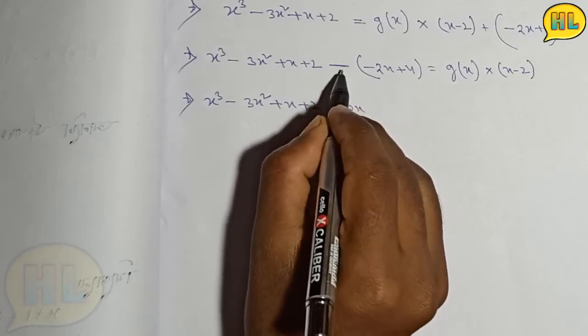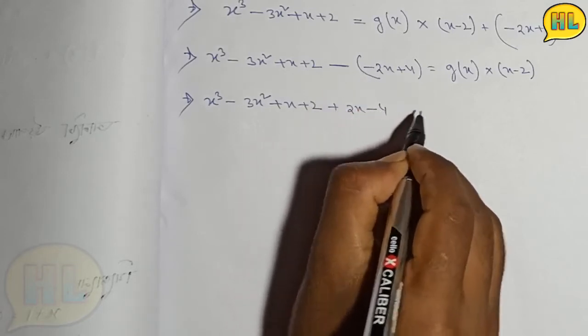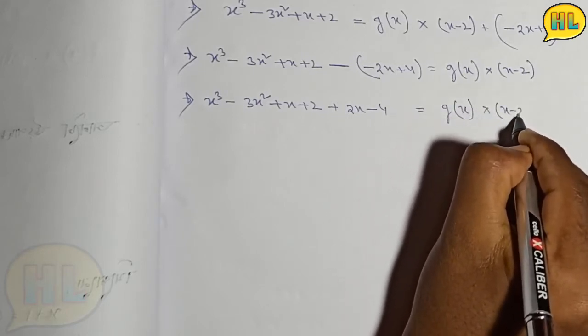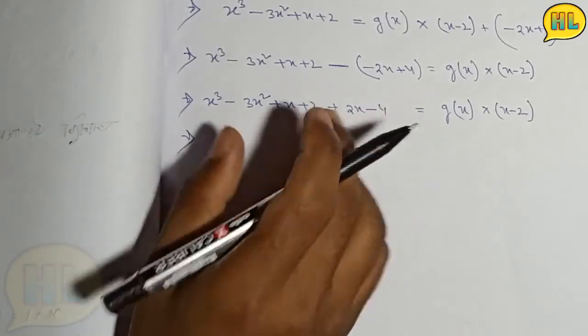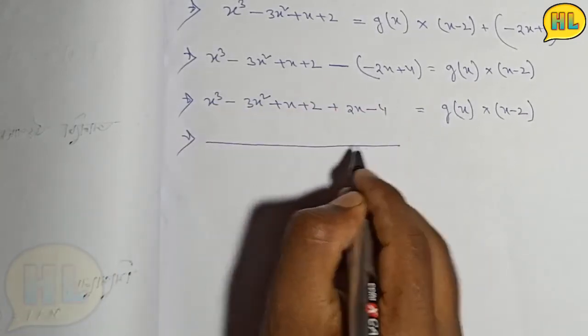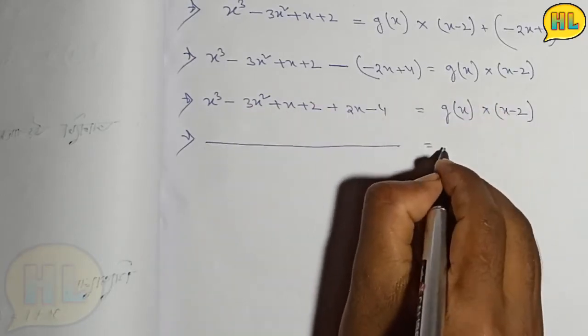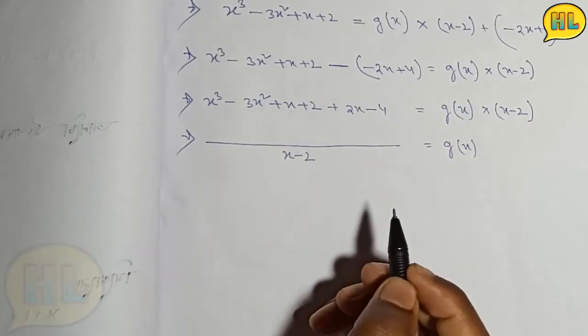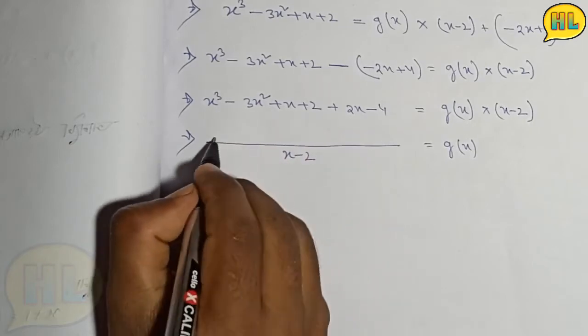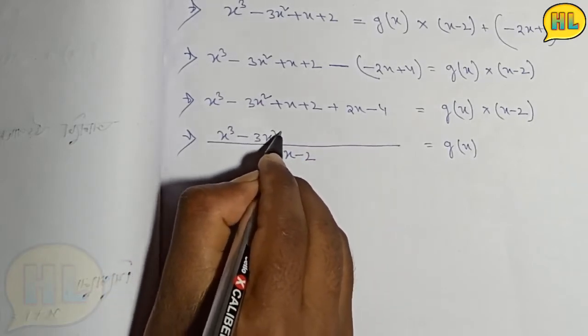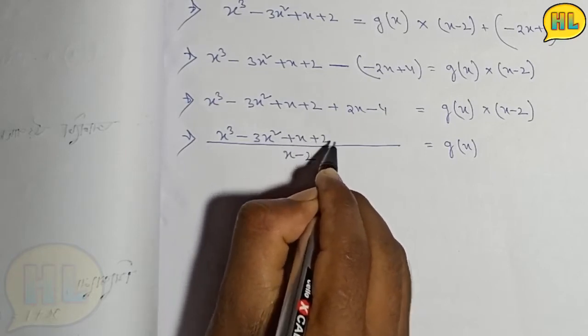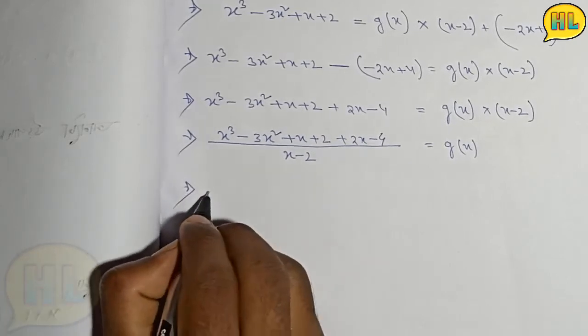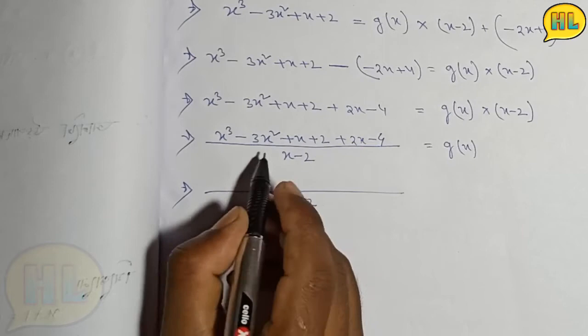Plus x times 2x minus, plus a minus 4 is equal to g(x) times x minus 2. We still have x minus 2, so let's work through this. X cube minus 3x square plus x plus 2 plus 2x minus 4.